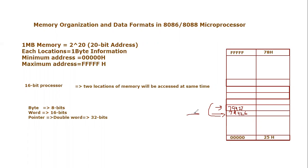Similarly, if I'm accessing a double word targeting address 79426, I will fetch not only from 79426 but also from 79427, 79428, and 79429 — fetching these four locations as a double word, which is what a pointer is. So at this stage we need to know there are three types of data formats in 8086: byte means 8 bits, word means 16 bits, and pointer or double word means 32 bits.